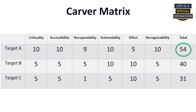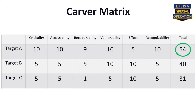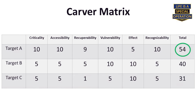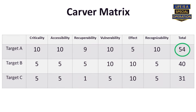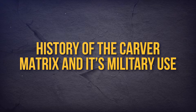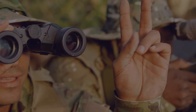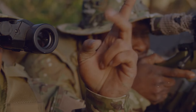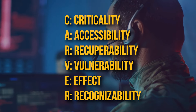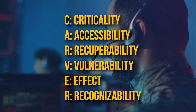The CARVER Matrix is an instrument that guides military operations by systematically assessing potential targets based on various criteria. It originated from the need to streamline the targeting process during military operations. This systematic evaluation framework revolutionized military targeting, enabling commanders to allocate resources efficiently and achieve mission objectives with precision.